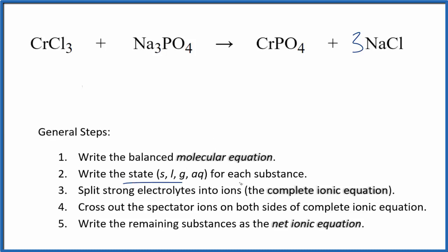The first thing we do is write the state for each substance. Compounds with the chloride ion here and here are usually soluble. Compounds with the sodium ion are almost always soluble. And in general, phosphates are insoluble.